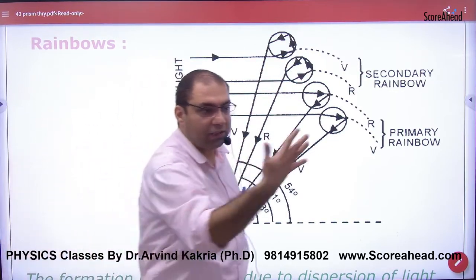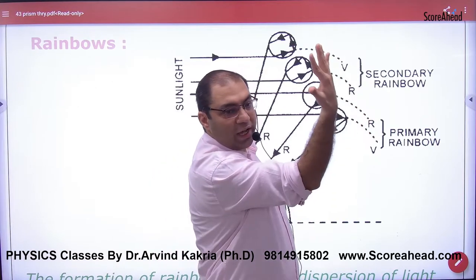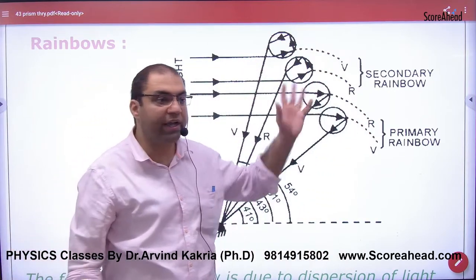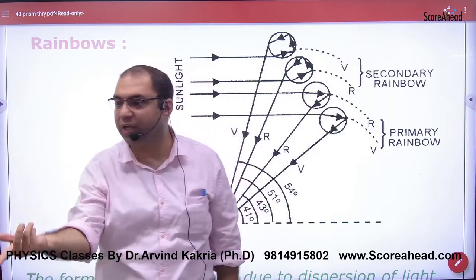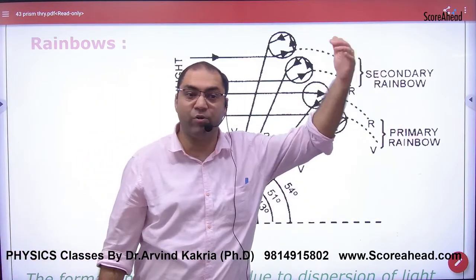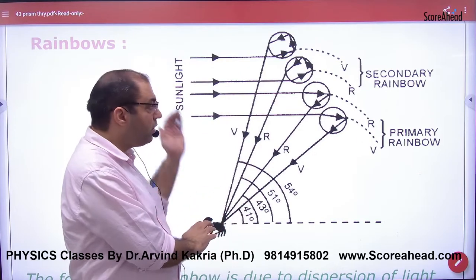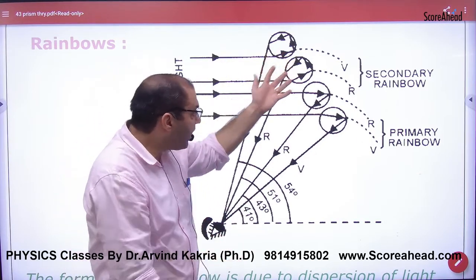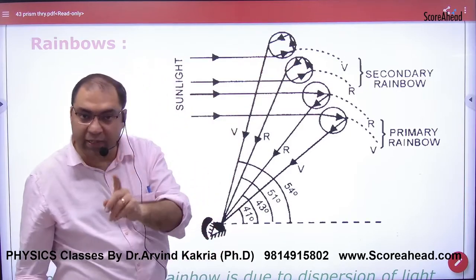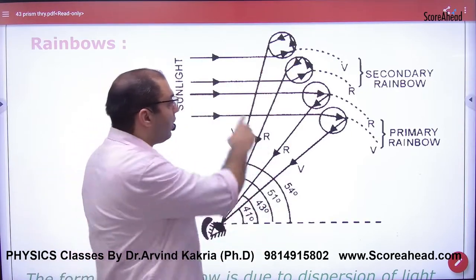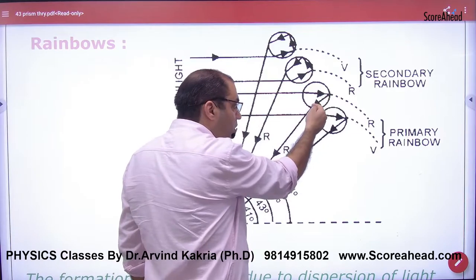TIR happens and light goes inside, then TIR happens again, then goes inside again, and through refraction reaches the observer's eyes. So think - seven colors are going, one TIR, two TIRs, and then coming toward the observer. If no TIR happens, light will go straight and won't reach the observer.